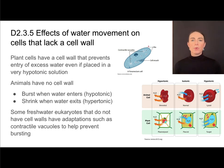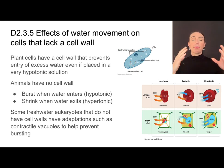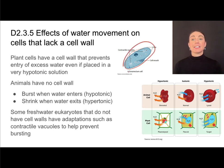Some freshwater eukaryotes like paramecia do not have a cell wall, so if placed in a hypotonic environment, lots of water could enter and the cell could burst. However, they have adaptations called contractile vacuoles that pump some of that excess water out. It requires energy, but it's a great example of homeostasis and adaptation to prevent bursting.